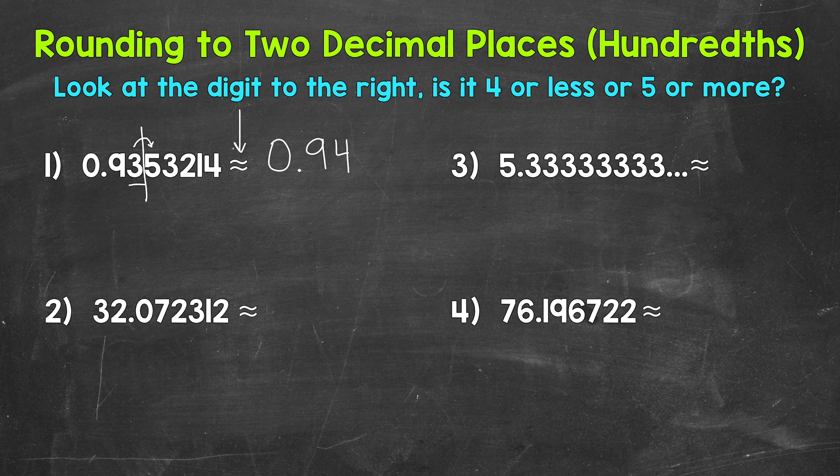Now this is the approximate sign. We use this because ninety-four hundredths is a rounded decimal. It's not exactly equal to our original decimal. So we use that approximate sign to show that we have an approximate rounded decimal.